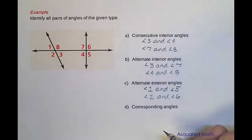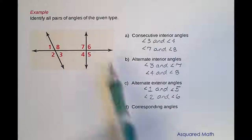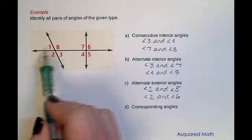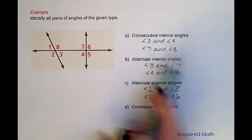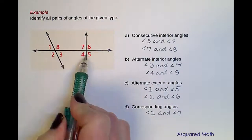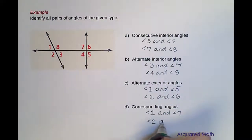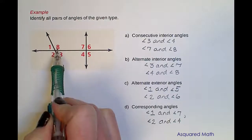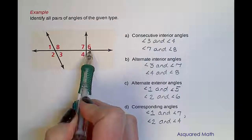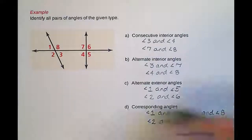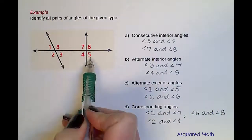The last part is corresponding angles — they lie in the same position, either to the left or right of these lines and above or below the transversal. We have angle 1 and angle 7, angle 2 and angle 4, angle 6 and angle 8, and finally angle 3 and angle 5.